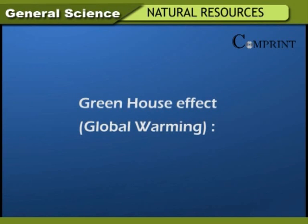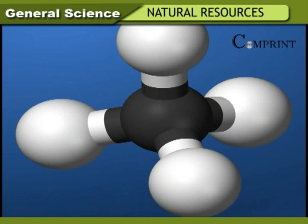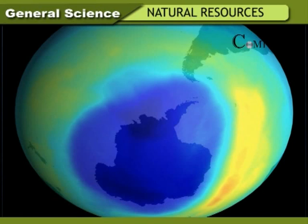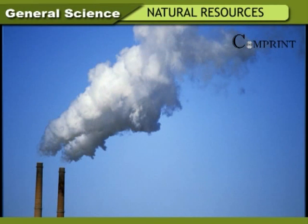Greenhouse effect and global warming: Earth absorbs some part of radiation from the sun and emits some part onto the atmosphere. Gases like carbon dioxide, methane, ozone, and water vapor — known as greenhouse gases — absorb the heat reflected by the earth. As a result, the atmosphere gets heated up. Due to enormous release of carbon dioxide into the atmosphere, the earth is absorbing more heat from the sun and is getting heated. This is known as the greenhouse effect or global warming.